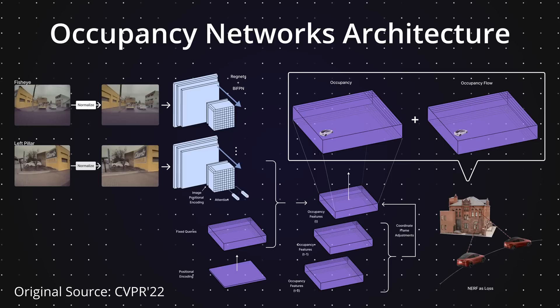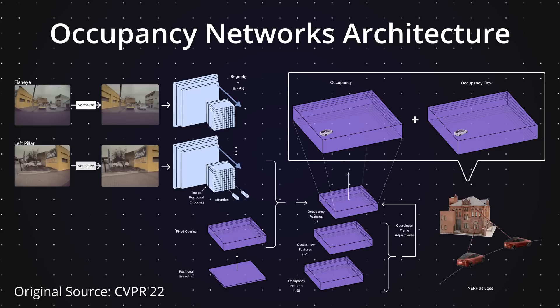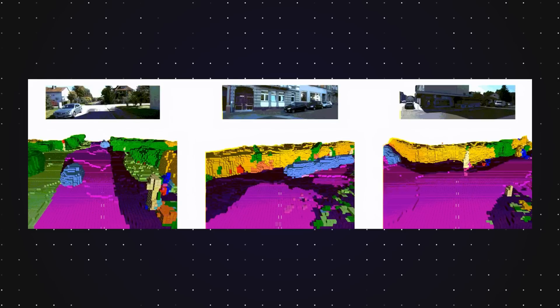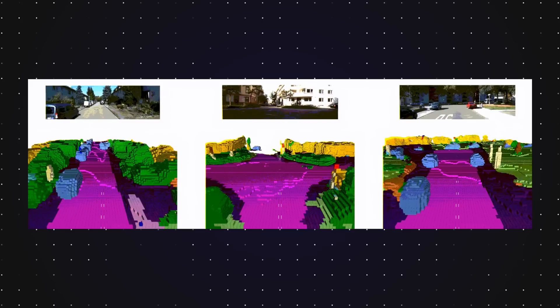They incorporated the results generated by NERF as a loss function within their occupancy networks. This approach allows for an optimization of NERF to run continuously in the background of the vehicle. By doing so, Tesla ensures that the occupancy information produced is consistently aligned with all sensor observations received in real time.